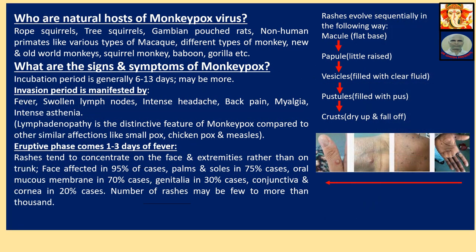Who are the natural hosts of monkeypox? Rope squirrels, tree squirrels, Gambian pouch rats, non-human primates like various types of macaque, different types of monkey — new and old world monkeys, squirrel monkey, baboon, gorilla — and rodents also.